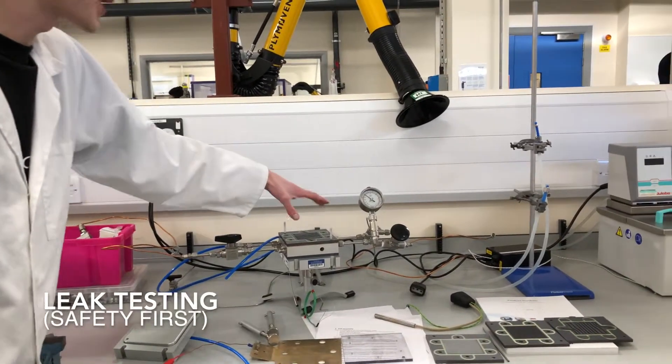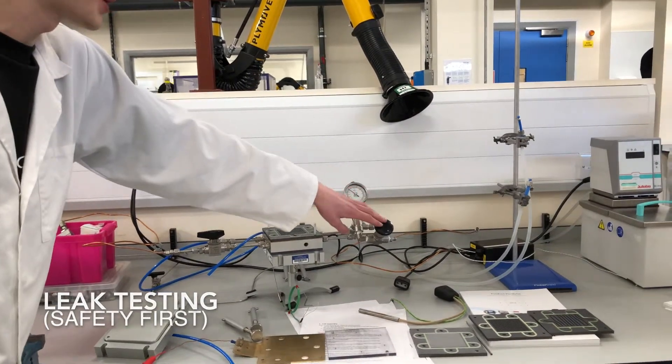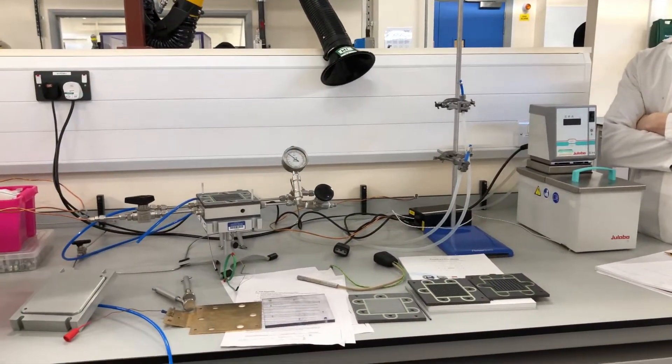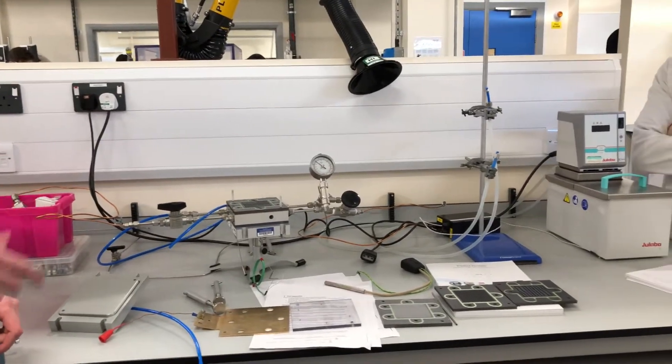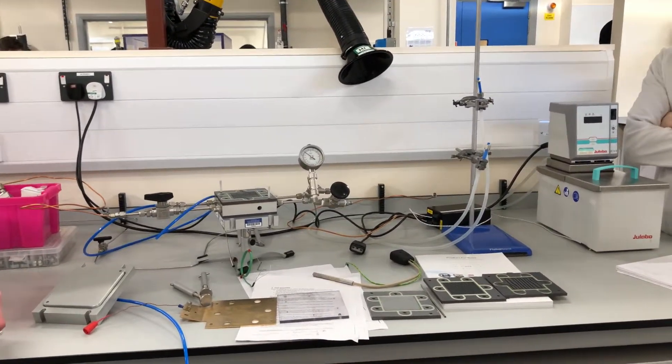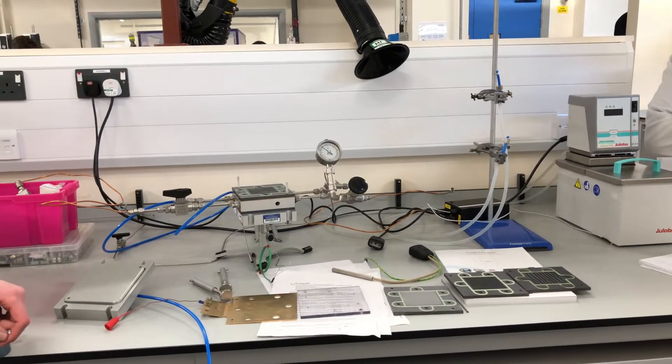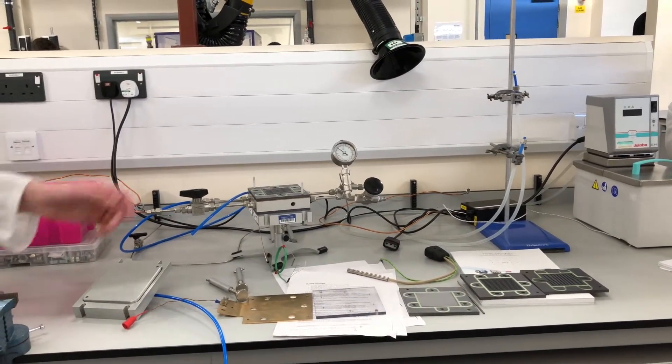So what we do here is we pressurize it up and then we open up the valve to see whether or not there's leaks. And basically if it leaks falls within the category, I think the category for us is like 0.2 PSI per minute. So if it's less than that we're okay, but at the moment we're having leaks.